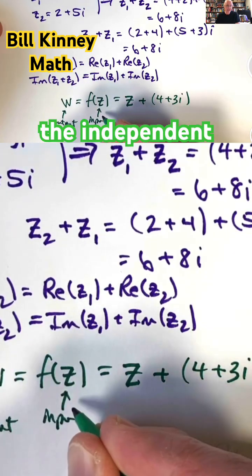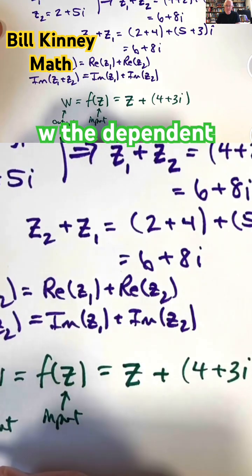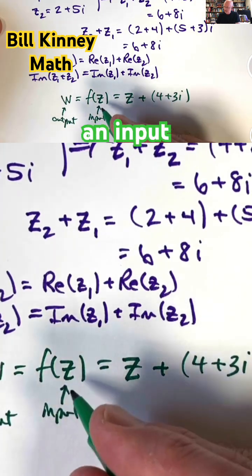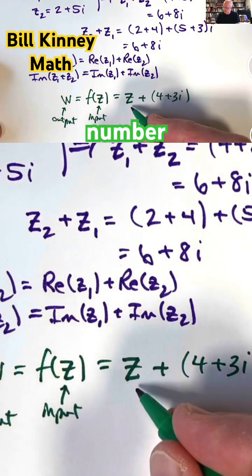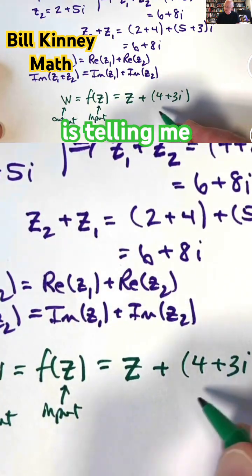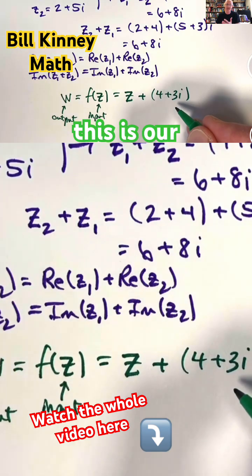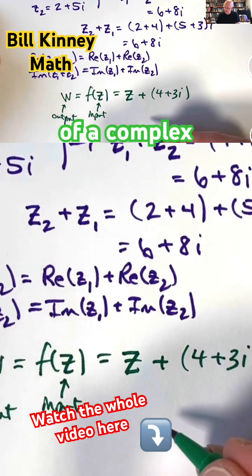You could call Z the independent variable and W the dependent variable. F is the function name. I'm taking an input Z as a complex number, and this formula is telling me take that Z and add 4 plus 3i to it. This is our first complex function of a complex variable.